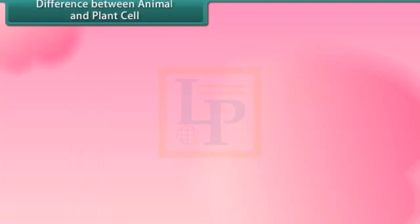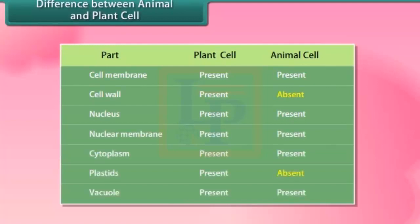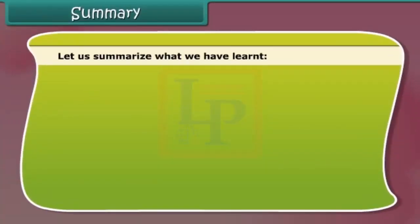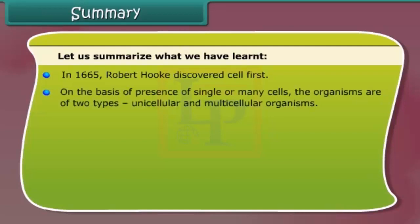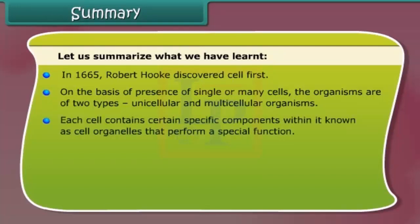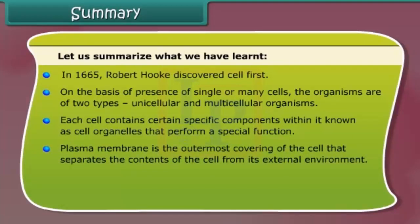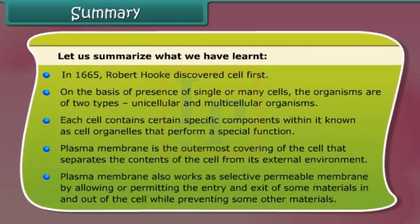Difference between animal and plant cell. Summary: In 1665, Robert Hooke discovered the cell first. On the basis of the presence of single or many cells, organisms are of two types: unicellular and multicellular. Each cell contains certain specific components known as cell organelles that perform special functions. The plasma membrane is the outermost covering of the cell, separating the contents of the cell from its external environment. It also works as a selectively permeable membrane, allowing or permitting the entry and exit of some materials in and out of the cell while preventing others.